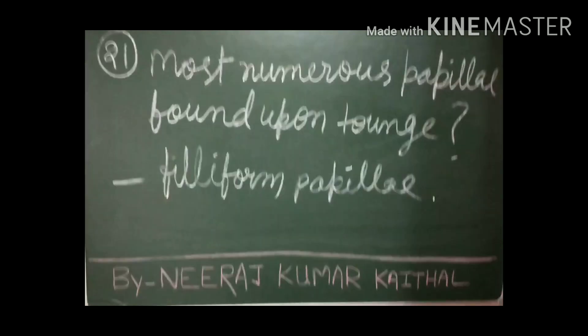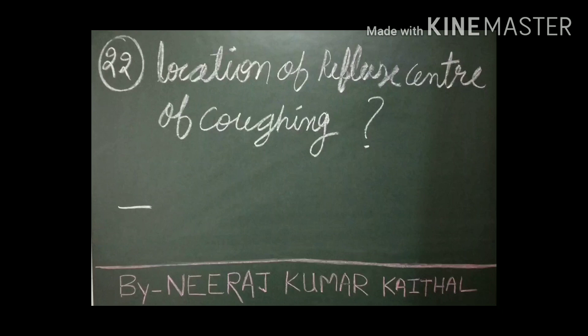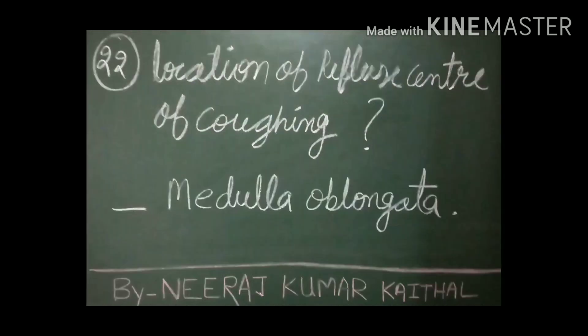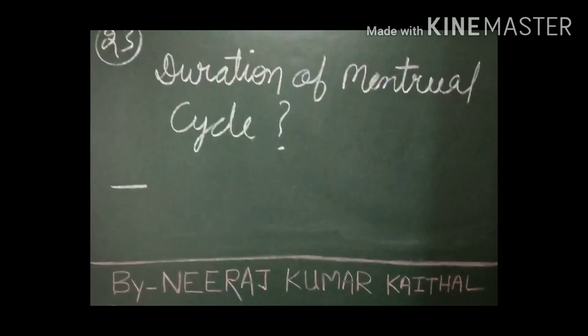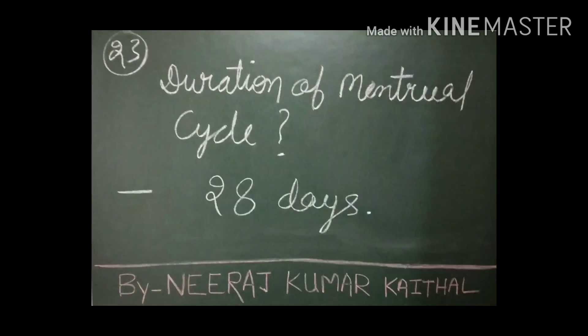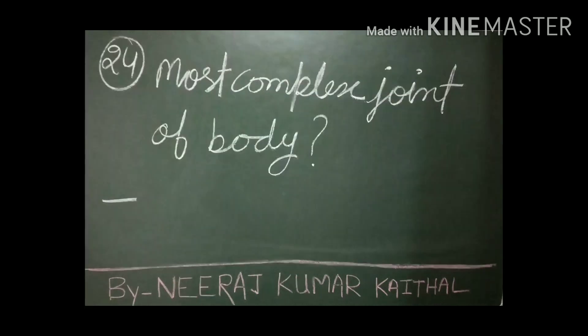Filiform papillae is the most numerous on the tongue. What is the location of the coughing reflex center? The reflex center of coughing is located in the medulla oblongata. What is the duration of the menstrual cycle? There are a total of 28 days in a menstrual cycle. The menstrual cycle is bleeding from the uterus in a cyclic manner and can be classified into four phases: proliferative, secretory, pre-menstrual, and menstrual phase.